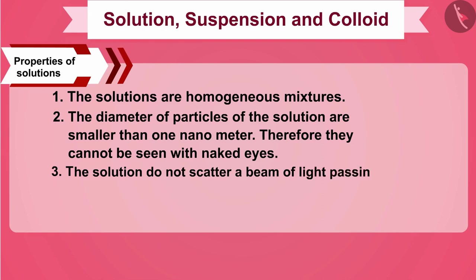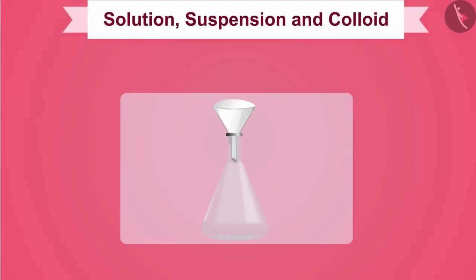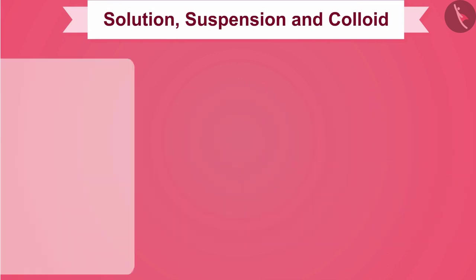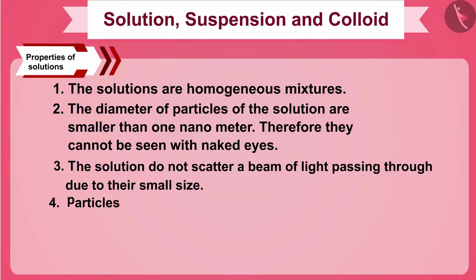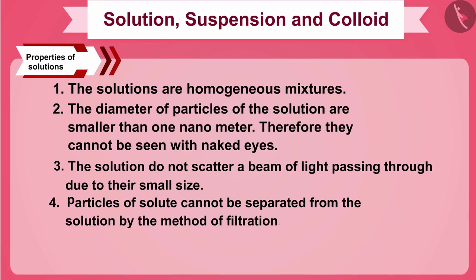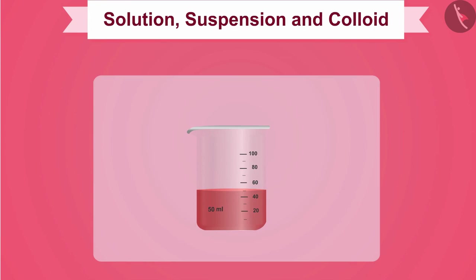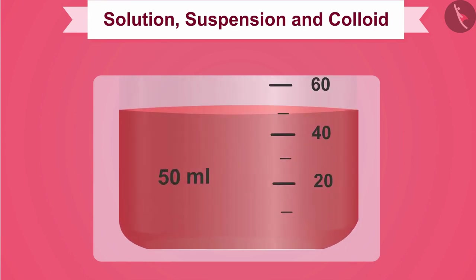The path of light is not visible in the solution because the particles do not scatter a beam of light passing through it due to their small size. If we try to separate iodine from the tincture of iodine solution using a filter paper, we do not succeed. Therefore, the particles of solute cannot be separated from the solution by filtration. Also, if we keep this solution undisturbed, the solute iodine particles do not settle down.